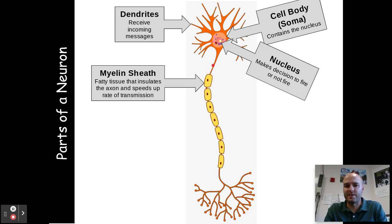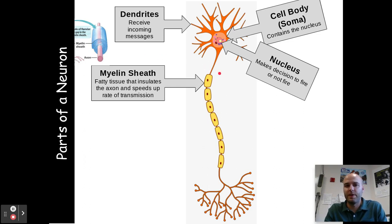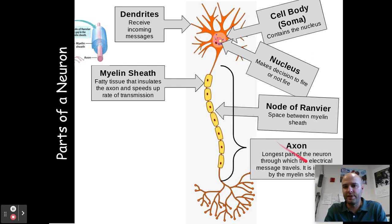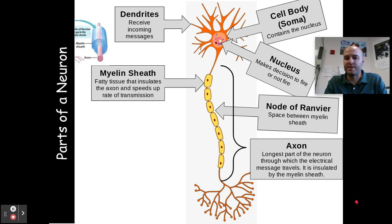Myelin sheath is fatty tissue that insulates the axon and speeds up the rate of transmission. The axon you can think of as a band, and around it is the myelin sheath. It insulates and allows the electrochemical signal to transmit faster and more efficiently. In between the myelin sheath are little gaps called the node of Ranvier — a space between the myelin sheath that allows electrochemical signals to jump, facilitating the speed of transmission. The axon runs the entire length of the neuron and is the longest part through which the electrochemical message travels.